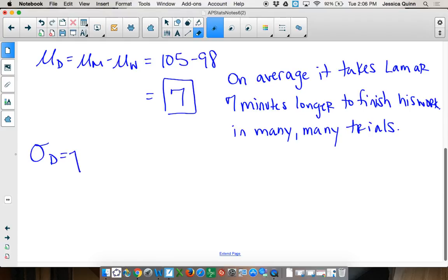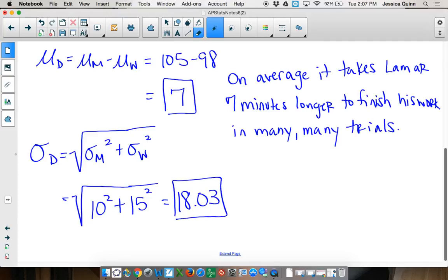Now here, for my standard deviation, what am I going to do for standard deviation when I'm combining two distributions? Square add square root. But this is subtraction. It's the same thing. Square add square root. So I'm going to square my standard deviation for M. Lamar's was 10 and Lawrence's was 15. So it is going to be 18.03. That's the standard deviation. On average, it's going to take Lamar seven minutes longer to finish his work. And how much can this vary by? About 18 minutes each time.